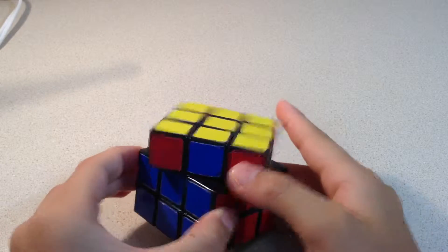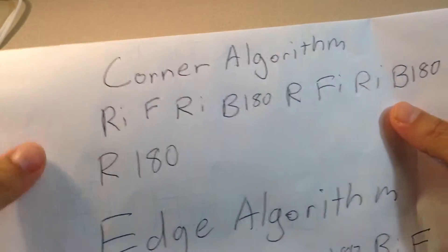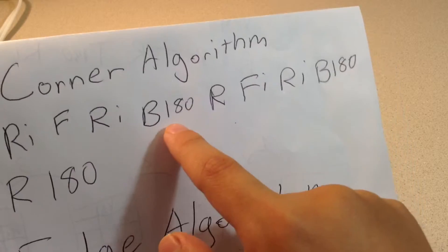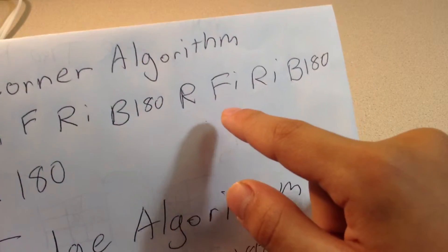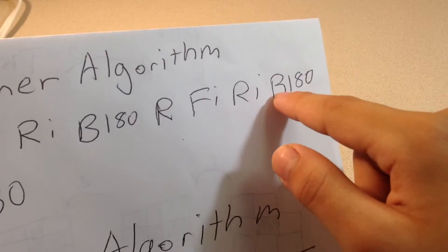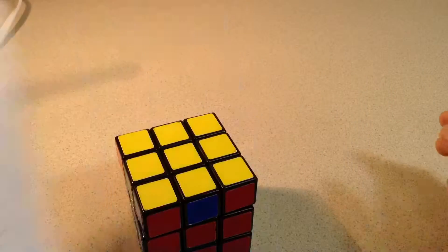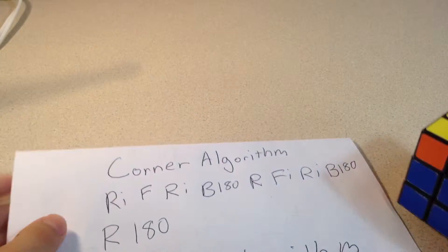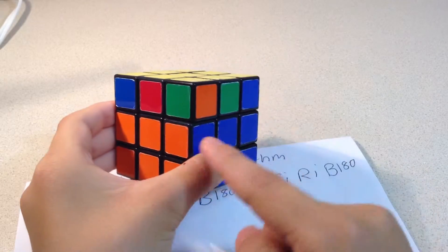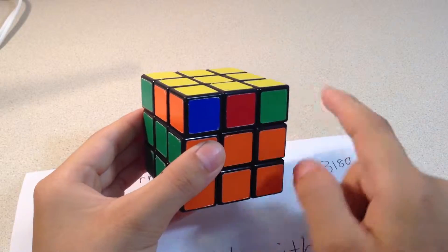You need to do the corner algorithm first. The algorithm is: right counter-clockwise, front clockwise, right counter-clockwise, back 180, right clockwise, right. If we perform that algorithm it'll take us to something that has all the corners solved — it's just that the edge pieces are not solved.